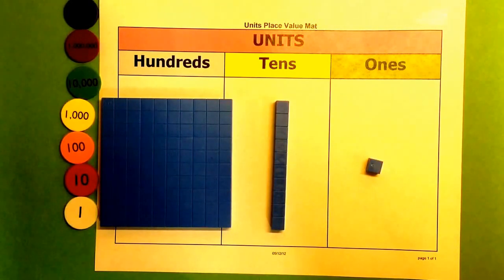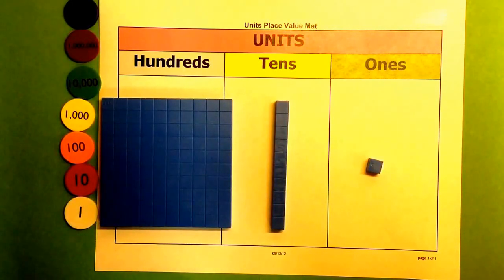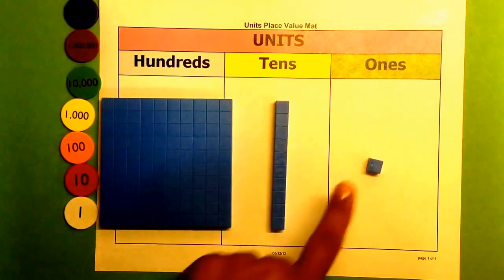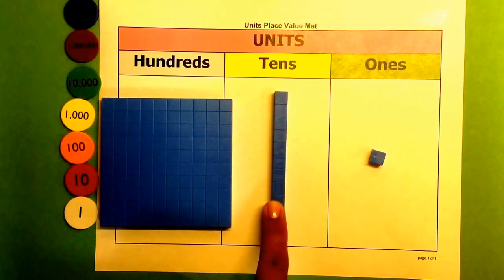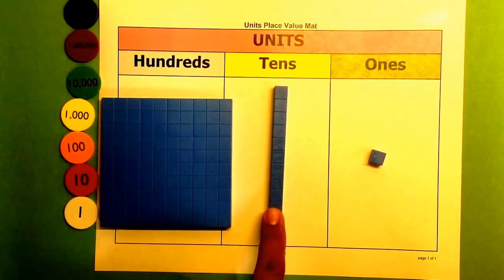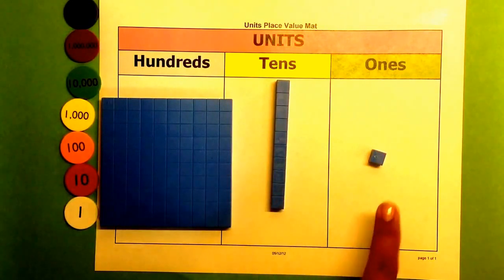So why are base 10 blocks proportional and why are place value disks non-proportional? With base 10 blocks, we say that there is a proportional relationship because there is a 1 to 10 relationship in regards to their size. It will take 10 units to make up one 10 long. The 10 long is 10 times larger than the unit to the right.